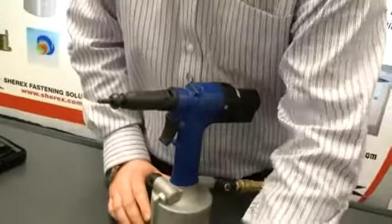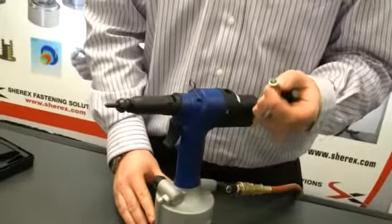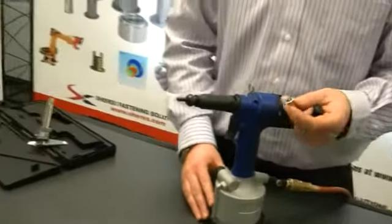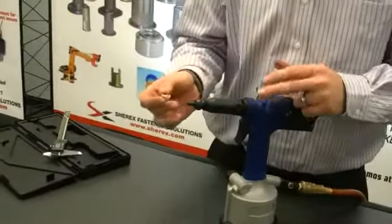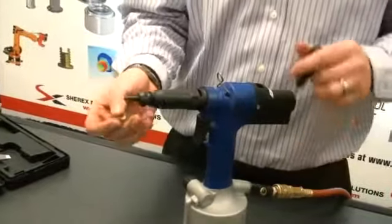To determine the proper pulling distance for a rivet nut, we measure what is called the installed length of the rivet nut. So, what we will do is install a rivet nut into a base material and measure the height of the back of the rivet nut.